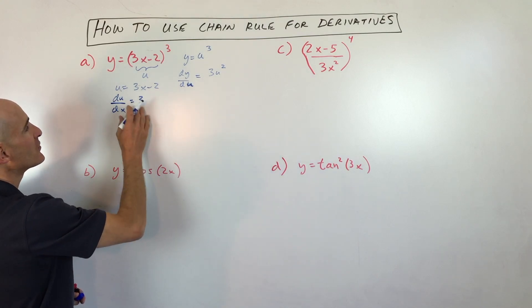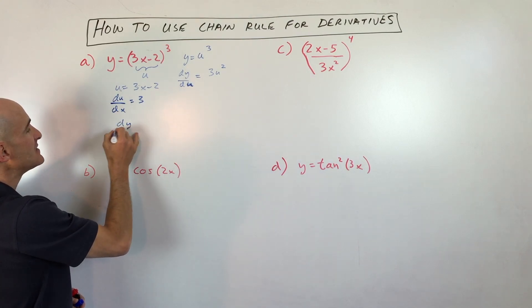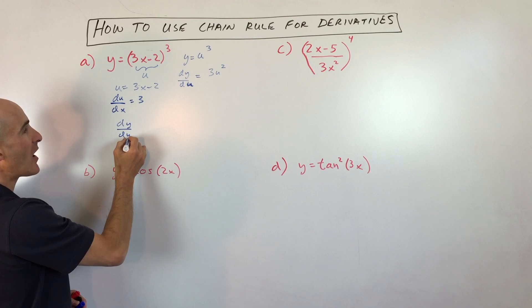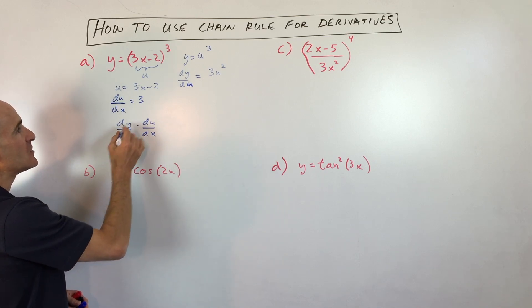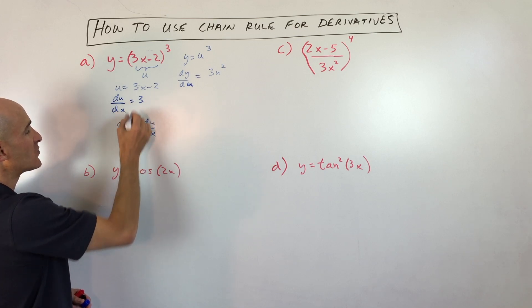Now we're going to put these together. We've got dy/du, the derivative of y with respect to u, and we're going to multiply that by the derivative of u with respect to x. So dy/du we got 3u squared, du/dx we've got 3.